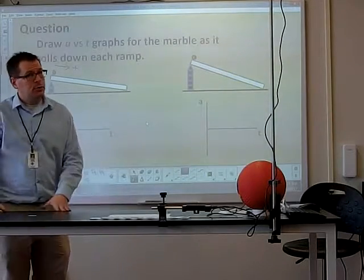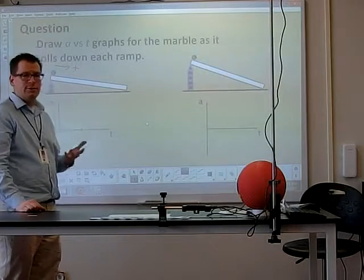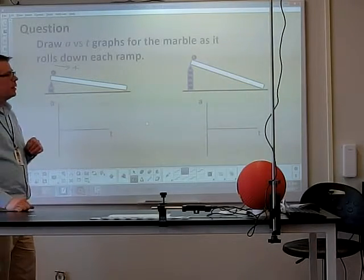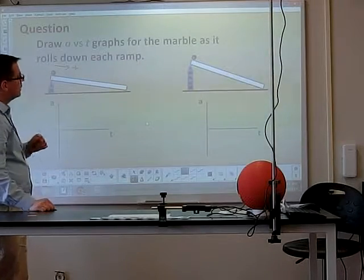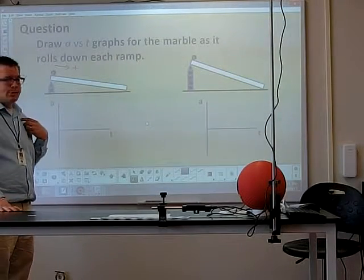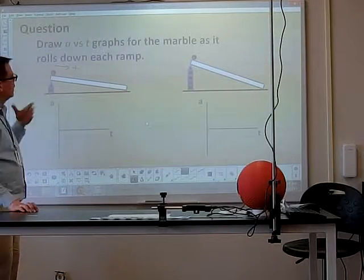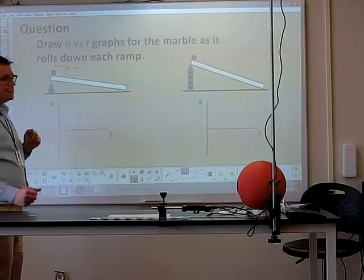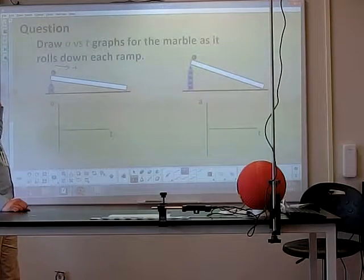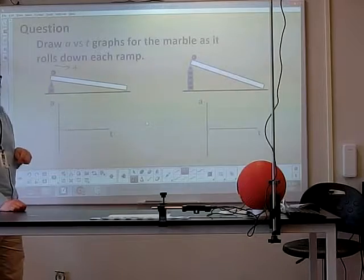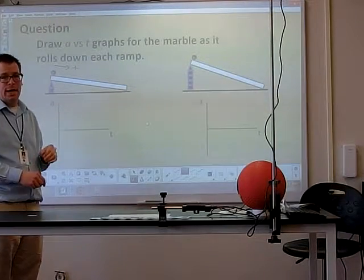Hello. As we continue to explore accelerated motion and continue working through different situations to apply our constant acceleration particle model, I'd like to give you this question to consider. If we consider down the ramp to be positive, I'd like you to draw acceleration versus time graphs for these two different configurations. How will the marble perform as it travels down each ramp? How would that be expressed in an acceleration versus time graph?